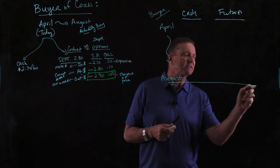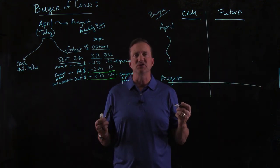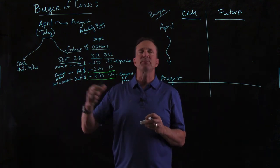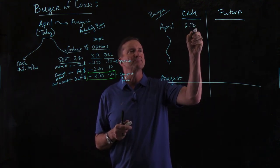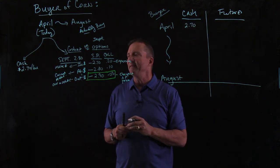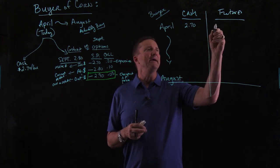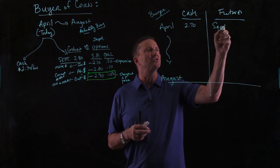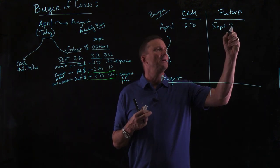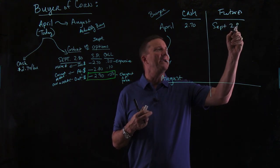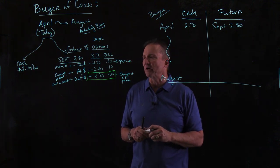This is going to be your table to set up the hedge, just like normal. Cash price when we first start is $2.70. And the futures price is going to be a September contract at $2.80 that we're looking at right now.